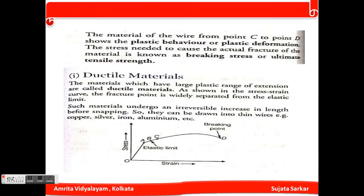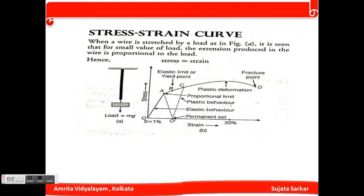The material of the wire from point C to point D shows plastic behavior, and this is called plastic deformation. The stress needed to cause actual breaking of the material is known as the breaking stress, or ultimate tensile stress. To summarize: the proportional limit is point A, the elastic limit is point B, plastic deformation occurs from B to D, and D is the fracture point.